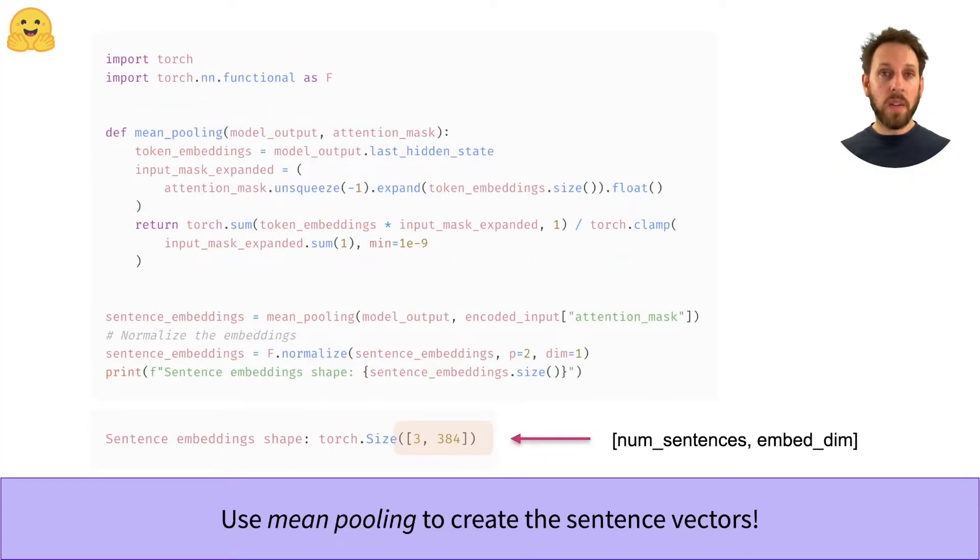To deal with this, we can use a technique called pooling. The simplest pooling method is just to take the token embedding of the special CLS token. Alternatively, we can average the token embeddings, which is called mean pooling, and this is what we do here.